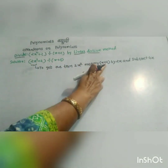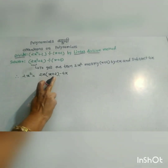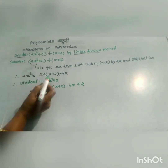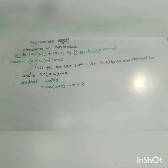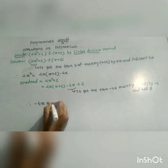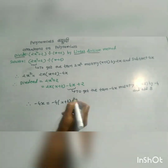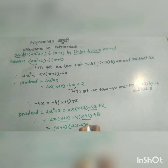By the linear division method: to get the term 2x squared, multiply x plus 2 by 2x and subtract, giving 2x squared equals 2x(x plus 2) minus 4x. Then to get the term minus 4x, multiply x plus 2 by negative 4 and add 8. Therefore x plus 2 is common — the divisor. The answer is: dividend equals divisor times quotient plus remainder, which is (x plus 2)(2x minus 4) plus 8.